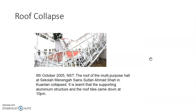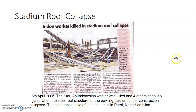Another collapse happened due to the roof of the multi-purpose hall of Sekolah Menengah Sains Sultan Ahmad Shah in Kuantan, where the aluminium structure and roof tiles came down at night. Another stadium in Negeri Sembilan also faced a roof collapse where an Indonesian worker was killed and another four had serious injuries. The cause was the collapse of the steel roof structure for a bowling stadium under construction — a structural failure involving steel.